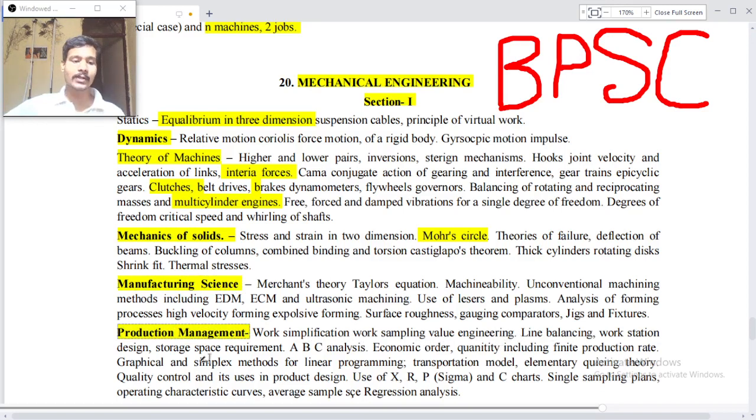Production management - work simplification, work sampling, value engineering, line balancing, workstation design, storage space requirement, ABC analysis, economic order quantity including finite production rate, graphical and simplex methods for linear programming, transportation model, elementary queuing theory.